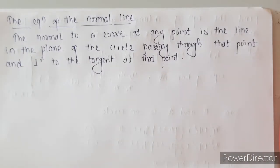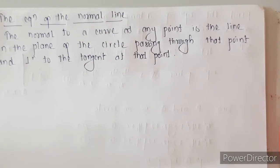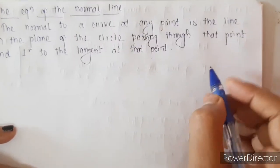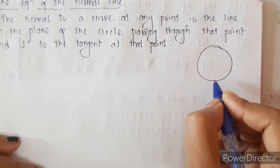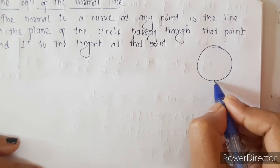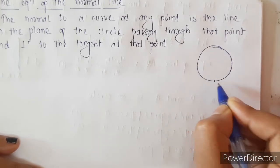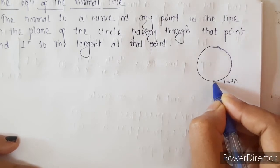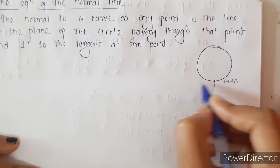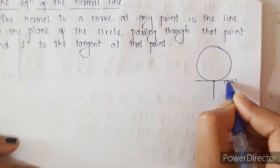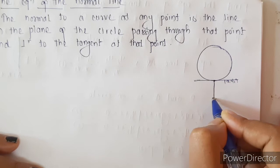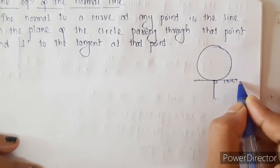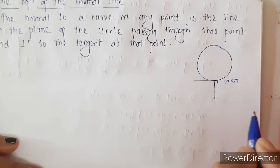The equation of the normal. The normal to a curve at any point is a line in the plane of the circle passing through that point and perpendicular to the tangent at that point. Suppose we have a circle and a point x1, y1 on it. A line through that point is called a normal provided it is perpendicular to the tangent at the same point. This line is then the normal to the circle.